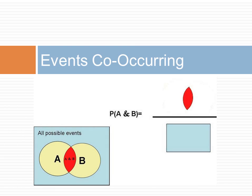Let us now examine the probability of both events co-occurring. The probability of A and B occurring together corresponds to the overlap between A and B, and can be shown graphically as the red area divided by all possible events — the rectangular blue area.